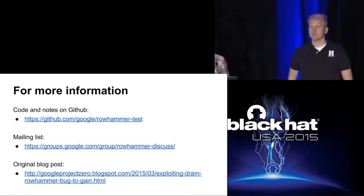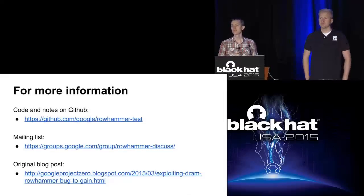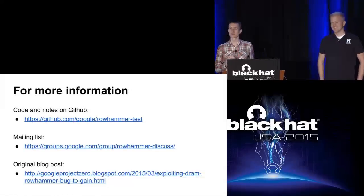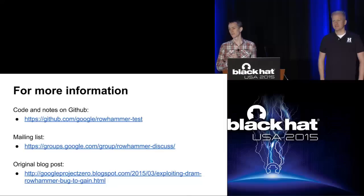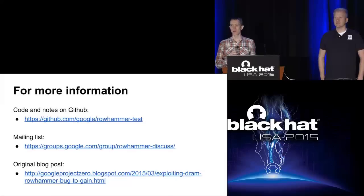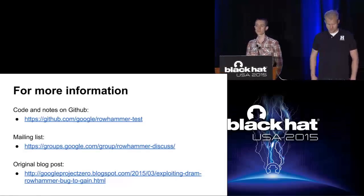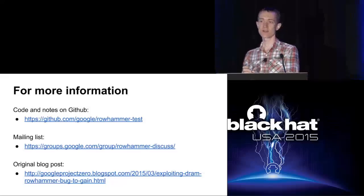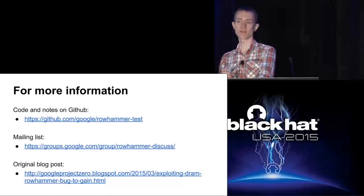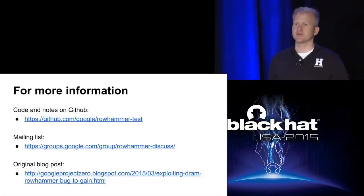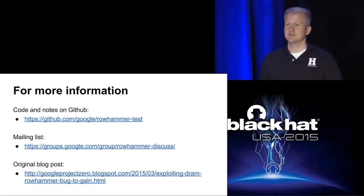Q: Are you aware of memory scrambling as a mitigation measure? A: There's a distinction between data scrambling and address scrambling. If you're doing address scrambling that could probably help mitigate double-sided hammering but not one-sided hammering. Data scrambling wouldn't help. In a server scenario you're probably better off with ECC - the odds of an attacker being able to escalate privileges without rebooting when you have ECC are essentially negligible.